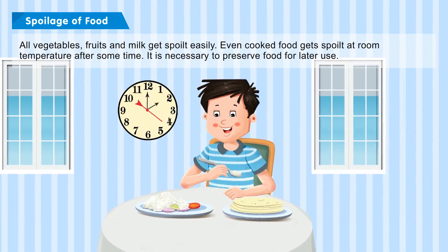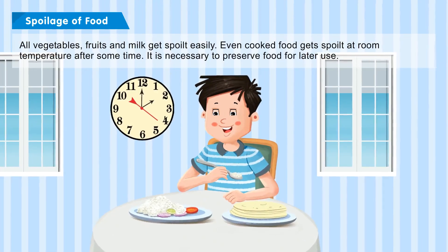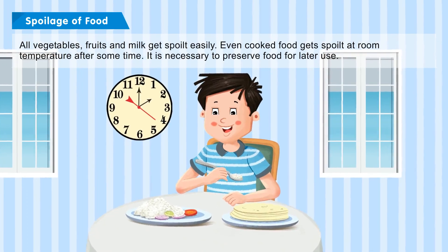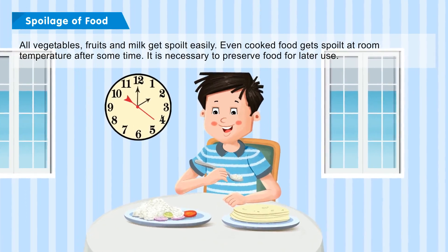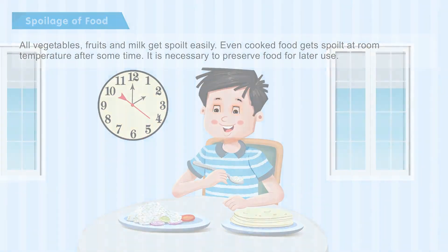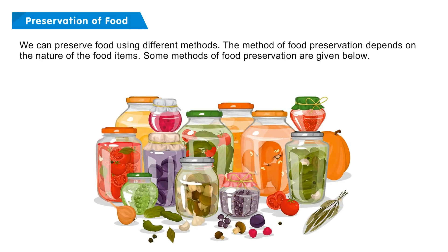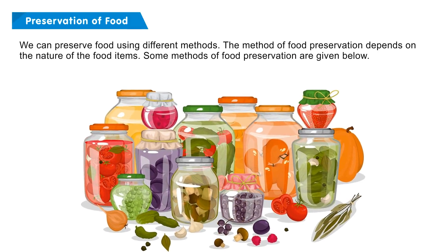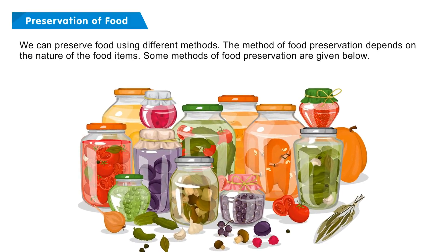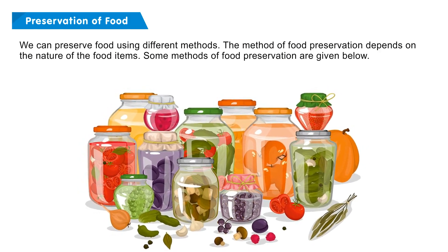All vegetables, fruits, and milk get spoiled easily. Even cooked food gets spoiled at room temperature after some time. It is necessary to preserve food for later use. We can preserve food using different methods. The method of food preservation depends on the nature of the food items.